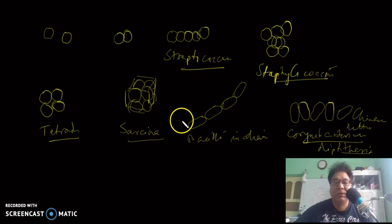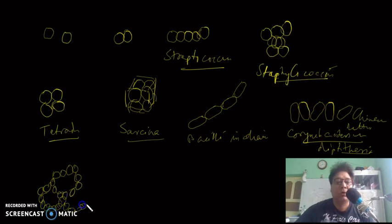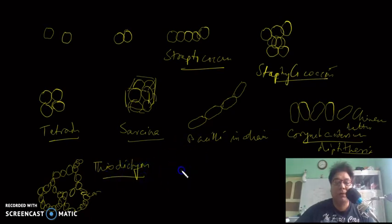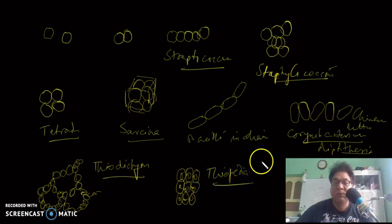Sometimes we also see netted structures — bacteria in chains that form nets. This is an example of Thiodictyon. Another arrangement is pad-like structures, represented by Thiopedia. Both Thiodictyon and Thiopedia are photosynthetic sulfur green bacteria.